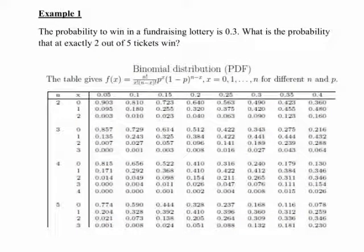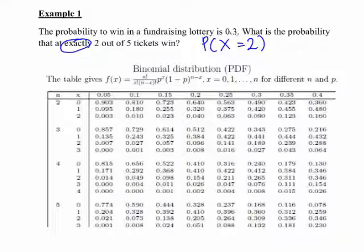So here's our first example. The probability to win in a fundraising lottery is 0.3. What's the probability that exactly 2 out of 5 tickets win? This is a binomial distribution problem. But is it a PDF or a CDF? We're looking at the probability that exactly 2 out of 5 tickets win, that is we want the probability that the number of successes X equals 2. Therefore, probability of exactly a certain number of successes, that is probability of X equal to something, it must be a PDF.